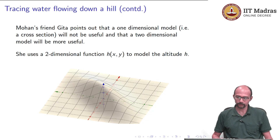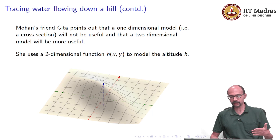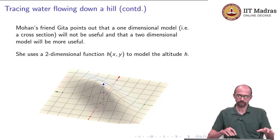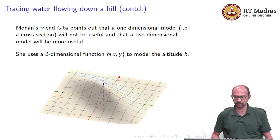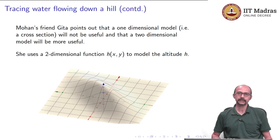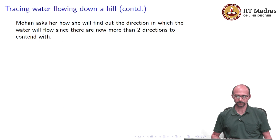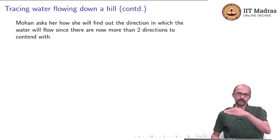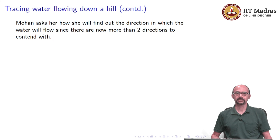Gita models the actual hills, which have more contours, using the function h of x, y. Mohan asks how she will find out the direction in which water flows, since now there are more than two directions. If you had only a function of one variable h of x, computing the derivative told you the direction. But now there are several directions, so how do we know from this function how the water will flow down?